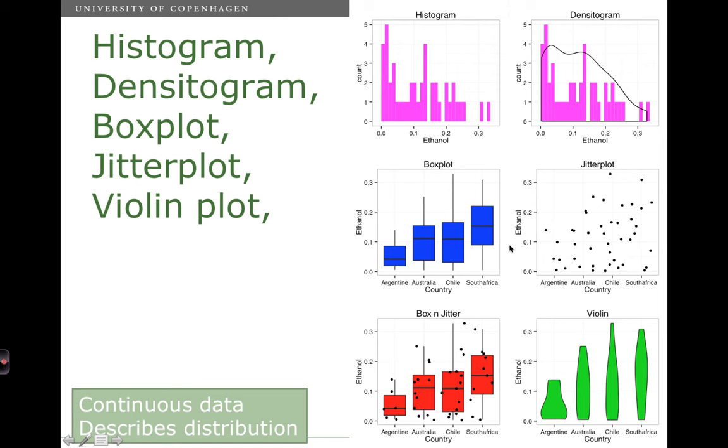A jitterplot is basically the raw data plotted. So each point is one sample. And then we have all the samples from Argentina here. We have all the samples from Australia here and so forth. It is hard on the jitterplot to distinguish between the samples. So is this sample from Australia or from Argentina? It is hard to tell. So what is nice is that you can use the two plots together and plot them on top of each other. So that is what is done down here in box and jitter. So where we both get the distributional from the box plot as well as the single raw data points.